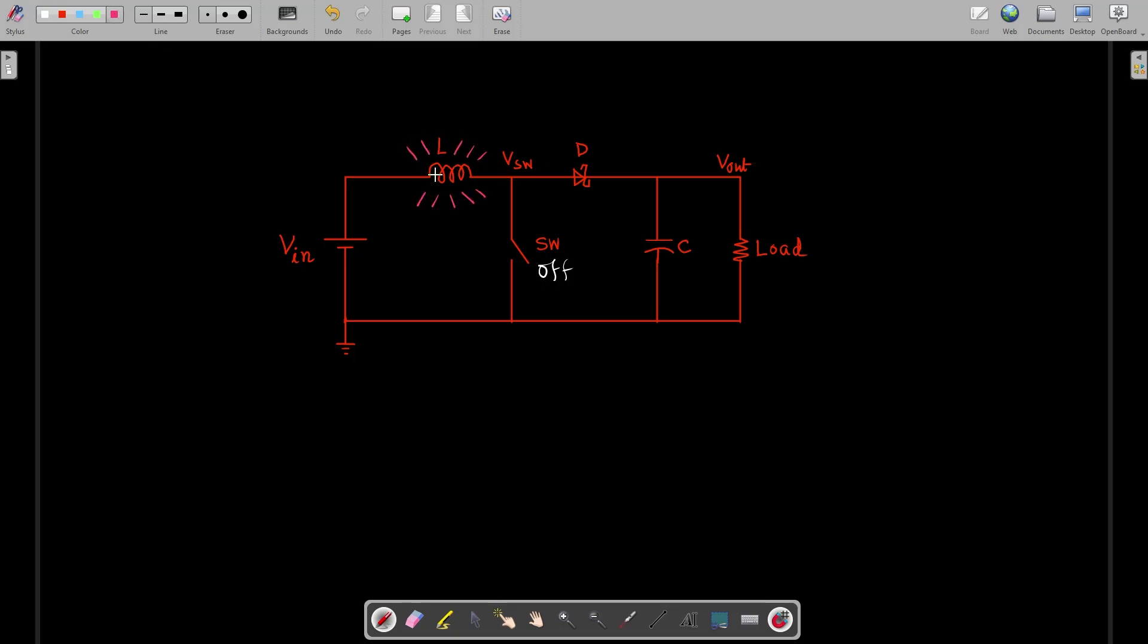The energy stored in the inductor tries to maintain the current constant flowing through it, so the inductor now becomes a source of energy. It generates a voltage across it and the polarity of the voltage becomes such that it can push the current in the same direction as it was flowing when the switch was on. Now the voltage at the vsw node is vin plus vL, so now the diode is forward biased and the output capacitor starts charging.